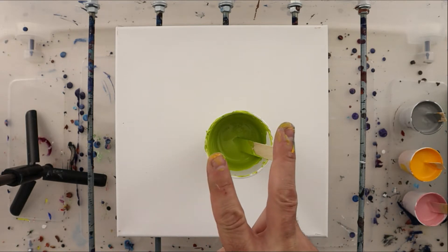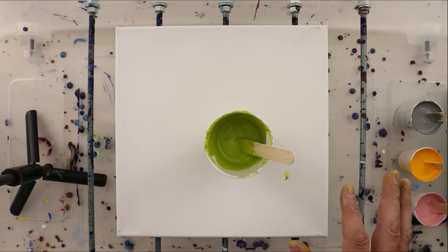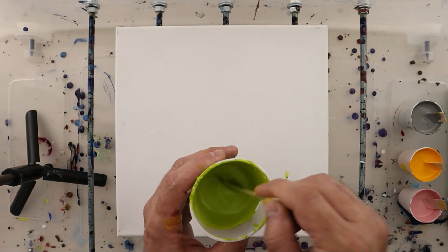With this, I mix two parts pouring medium to one part paint. There's about 30 grams of paint, 30 to 60 grams of pouring medium, plus a little bit of water depending on the thickness. So one to one, one to two, right in there for each of these.